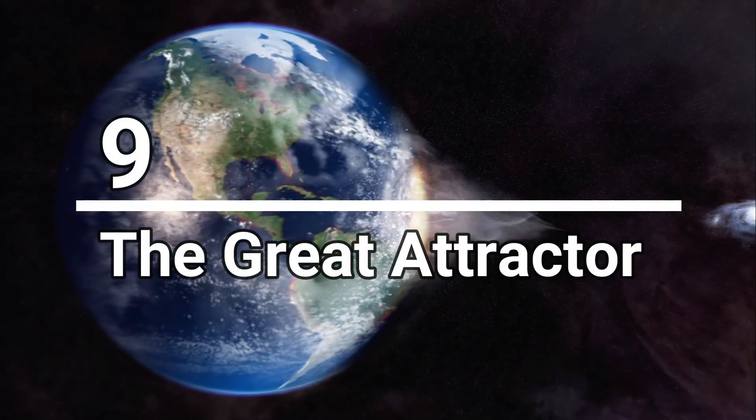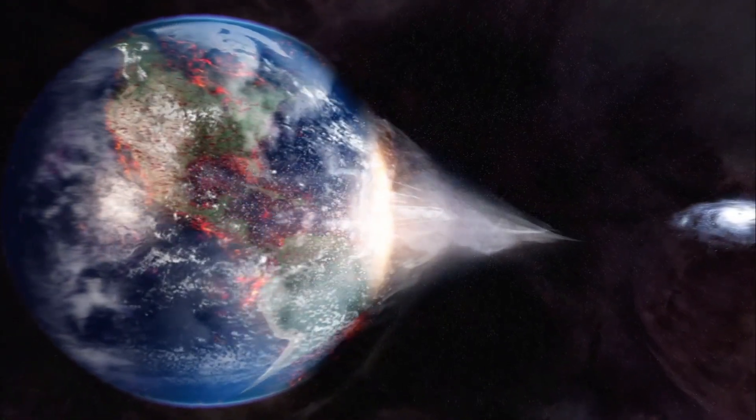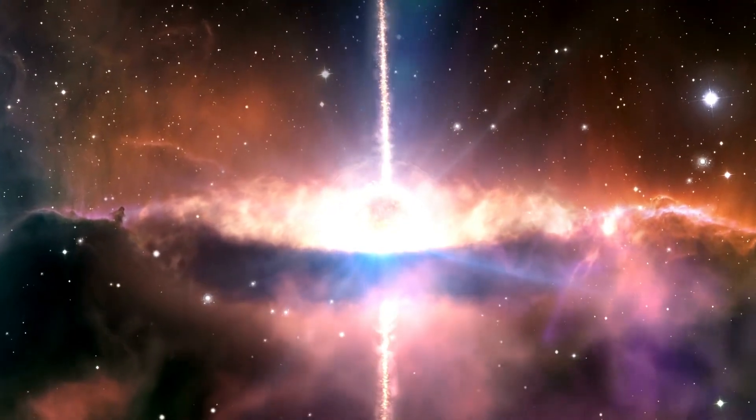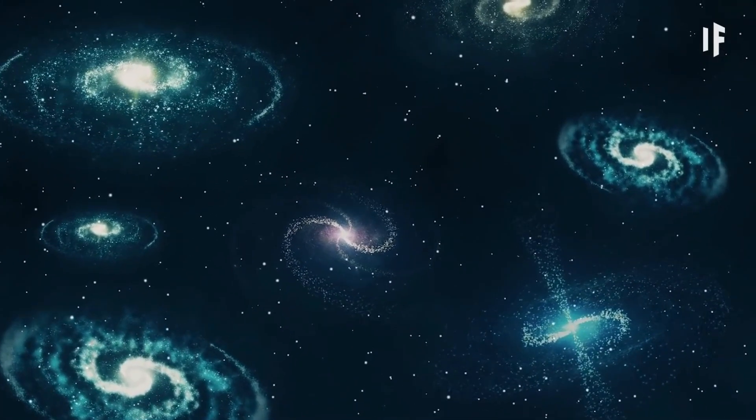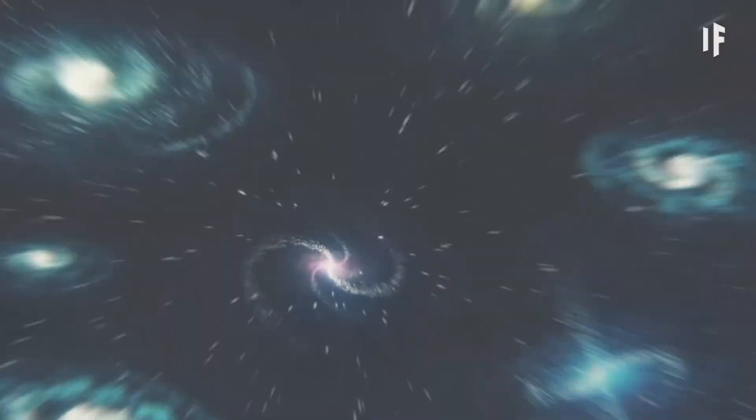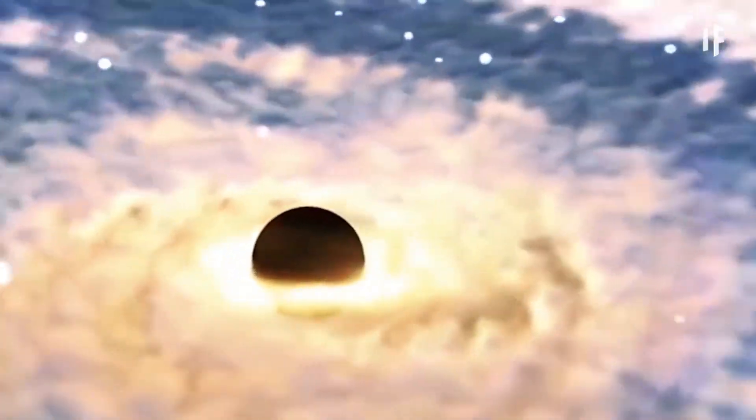Number 9, the great attractor. The great attractor is our second mysterious phenomenon. This cosmic titan has enormous gravitational attraction, attracting innumerable galaxies. However, its real nature and the source of its gravitational pull remain a mystery. What is the origin of this gravitational anomaly? We are still looking for answers.